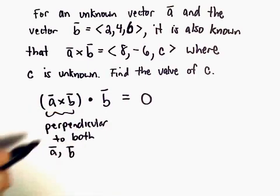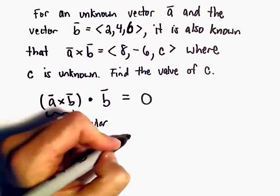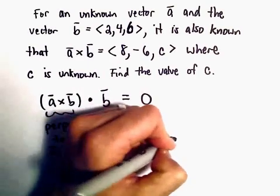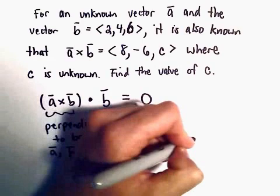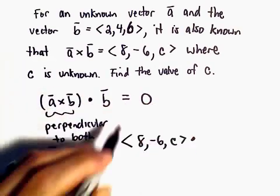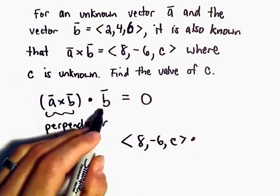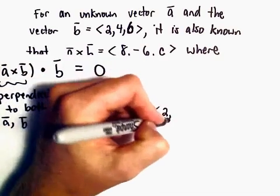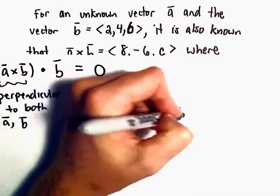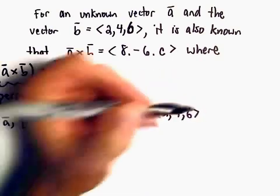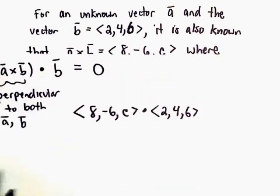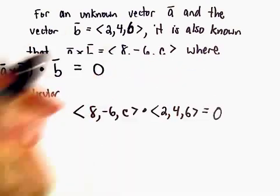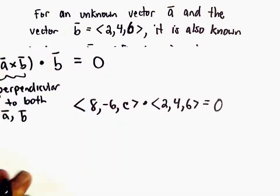So, A cross B has components 8, negative 6, c. We can dot that with vector B, which has components 2, 4, 6. And we know at the end of the day this has to equal 0.